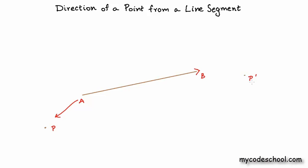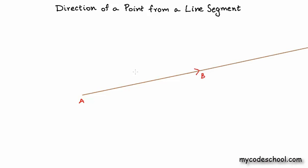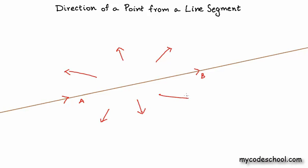Similarly, we could have another point P' that is located much after the line segment AB, and this point is also considered to be on the right of AB. What we are trying to say is that if we extend this line segment infinitely in both directions and we are still travelling in the general direction of AB, then any point in the upper half is on the left, and any point in the bottom half is on the right.